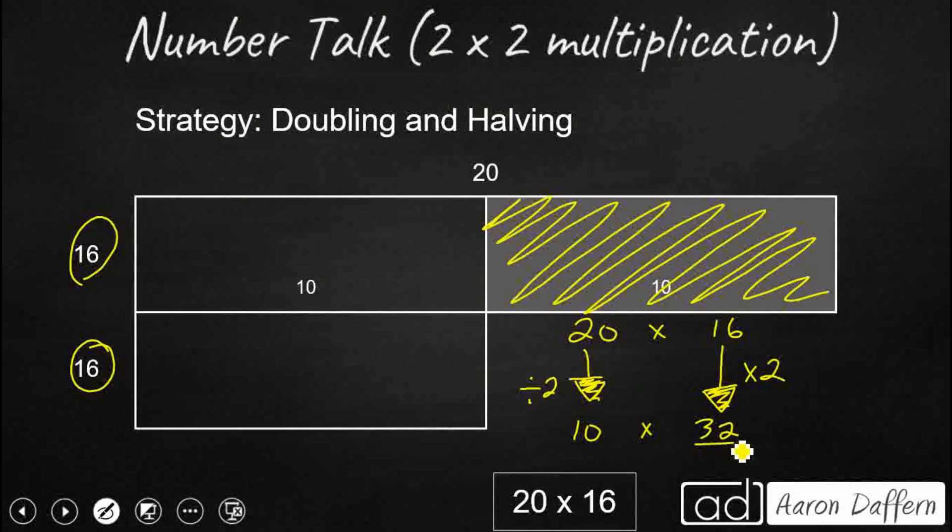Look at that. 10 times 32. Super easy. That's 32 times 1 equals 32. Add that zero. We've got 320.